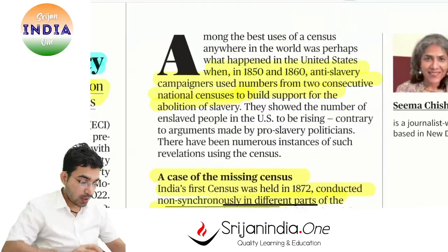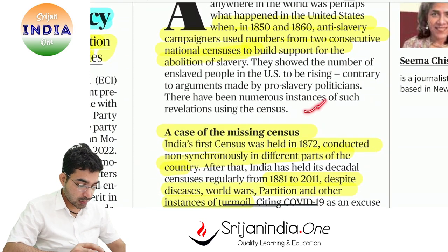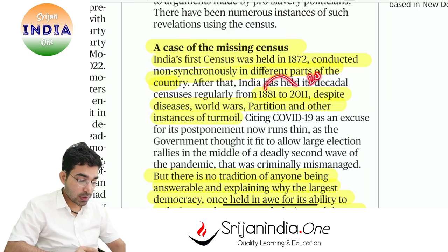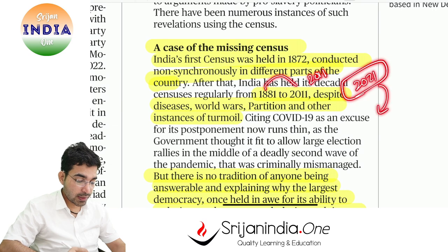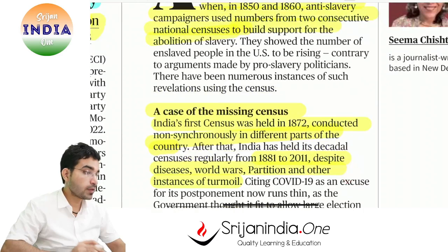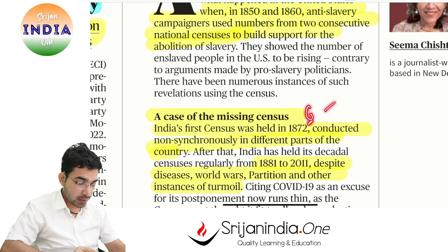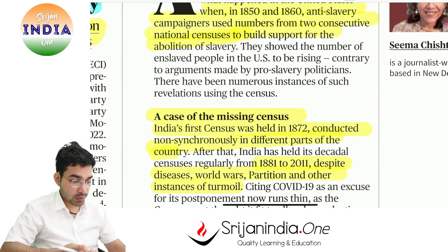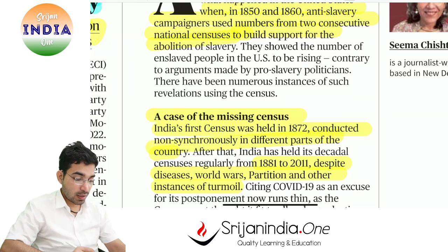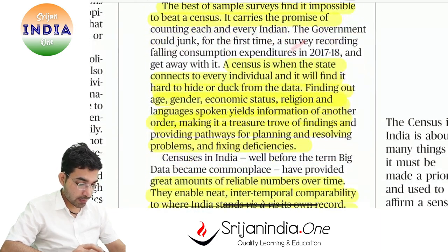The article 'A census is not about counting sheep' discusses what census means - counting all the people in India, the entire population. Census started in 1872 but proper census began from 1881 and continued through 2011. The 2021 census was delayed due to COVID-19. The census became prominent from the time of the anti-slavery campaign, because until the government knows who the subjects are and who is being governed, proper governance is not possible.